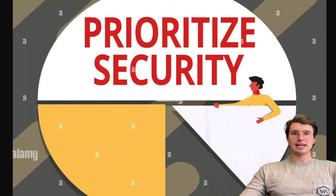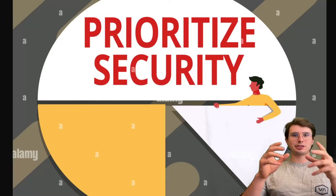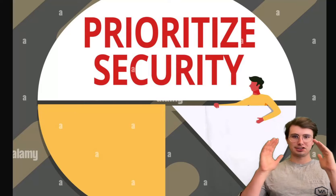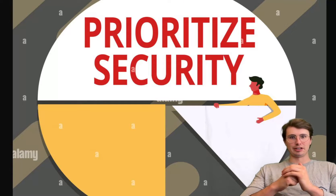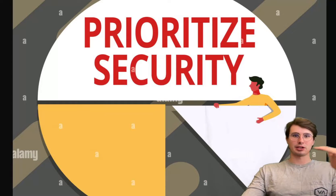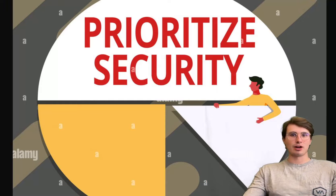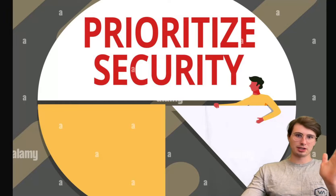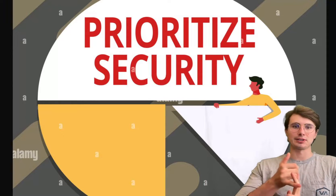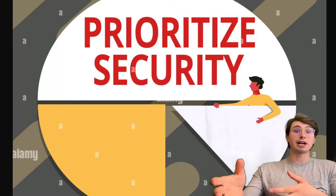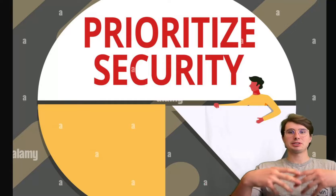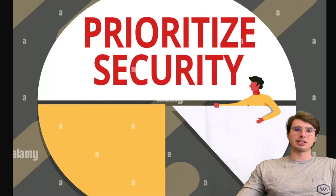The eighth principle is to prioritize security. Security is paramount in any data architecture, and prioritizing it involves integrating comprehensive security measures at all levels — from data acquisition to storage to access. This includes employing encryption, secure access controls, and regular security audits. A secure architecture protects against data breaches, ensures compliance with regulatory requirements, builds trust, and safeguards your organization's reputation.